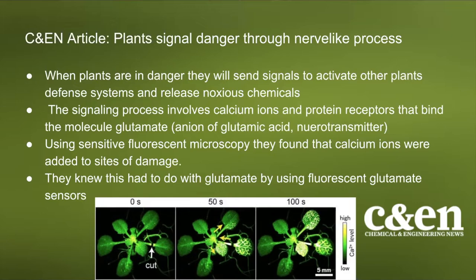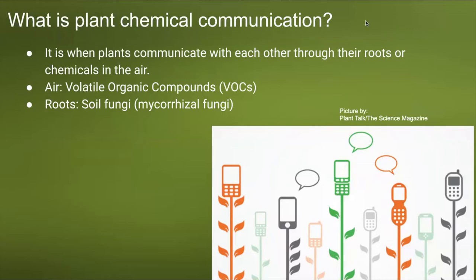Plant chemical communication is when plants communicate with each other through their roots or through chemicals in the air. When plants communicate through the air they use volatile organic compounds, also known as VOCs. They also communicate through their roots using soil fungi — more specifically mycorrhizal fungi, which will be referred to as such throughout this presentation.